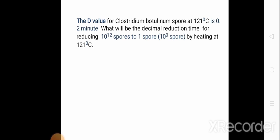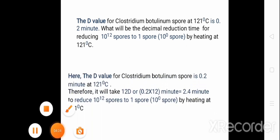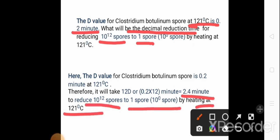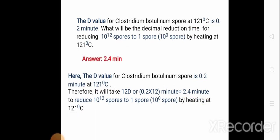Now let's solve some mathematical problems. The D value for Clostridium botulinum spore at 121 degrees centigrade is 0.2 minute. What will be the decimal reduction time for reducing 10¹² spores to 1 spore (that is 10⁰ spores) by heating at 121 degrees centigrade? Here we need a 12-log reduction, so it will take 12D, that is 0.2 × 12 = 2.4 minutes to reduce 10¹² spores to 1 spore by heating at 121 degrees centigrade.